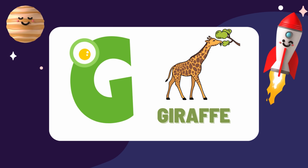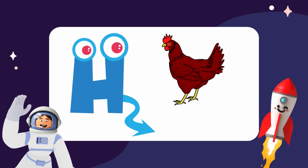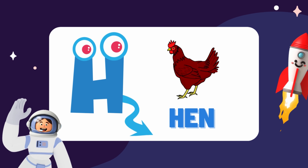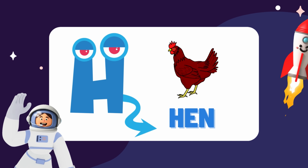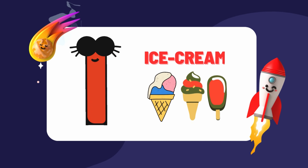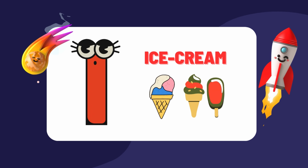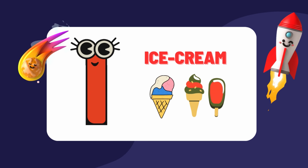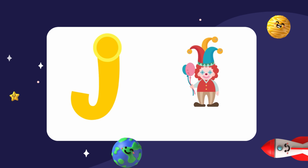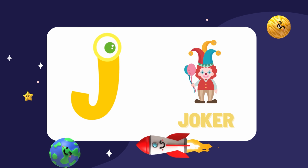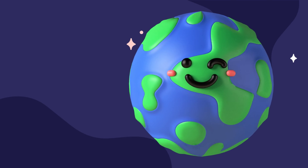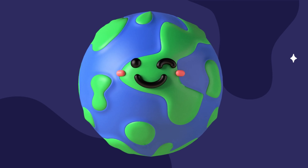S for ship. T for tiger. U for umbrella. V for van.